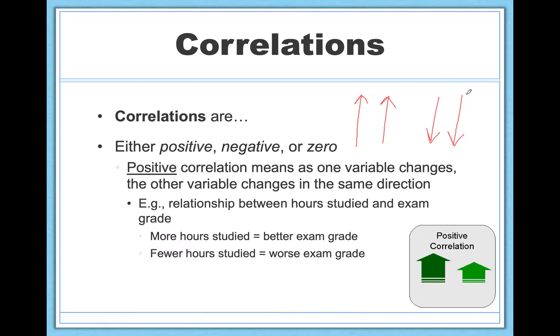Now notice that even though these are moving in the negative direction, right, we're decreasing how much we study and we're decreasing our exam grade, that doesn't make it a negative correlation. It's all about are the variables moving together, or as we'll see in a little bit, are they moving against one another?